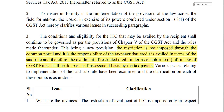The main line to consider: being a new provision, the restriction is not imposed through the common portal. It is the responsibility of the taxpayer that credit is availed in terms of the said rule. Therefore, the availment of restricted credit in terms of Sub-Rule 4 of Rule 36 shall be done on a self-assessment basis by the taxpayer. The biggest confusion was whether the portal would calculate ITC automatically — the circular clarifies that no, calculation will not be done automatically in the portal.